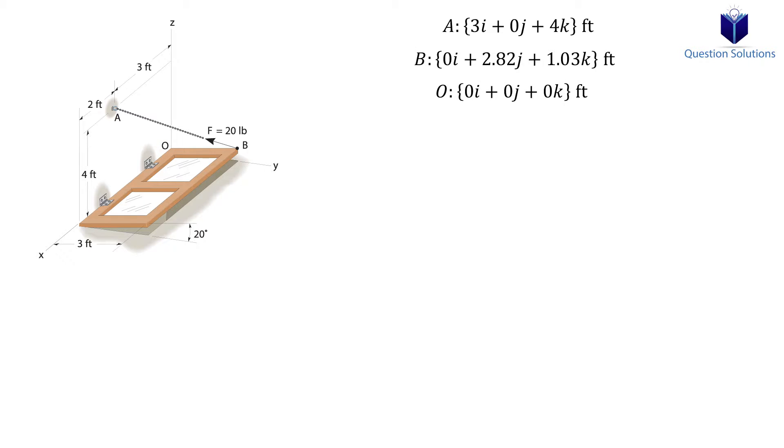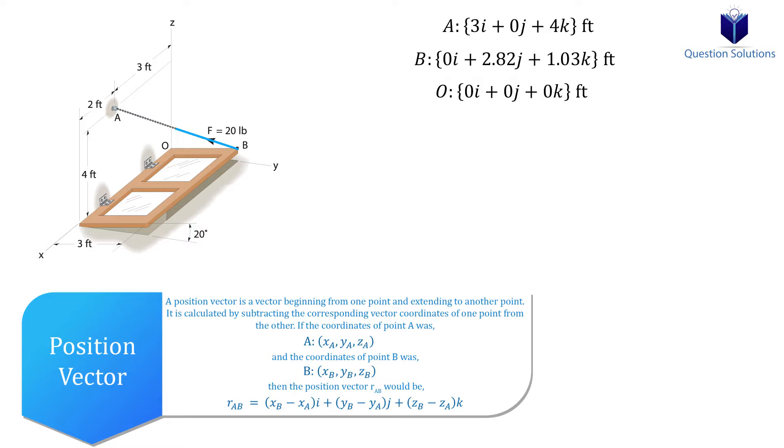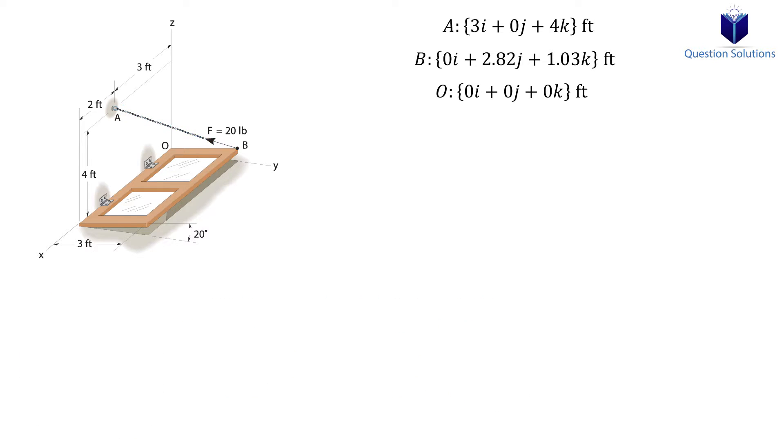Next, we can write our position vectors. First, from B to A. We will write it from B to A because you can see that the force originates at B and is going towards point A. Next, we can write a position vector from the origin to A. We will use this position vector later on.